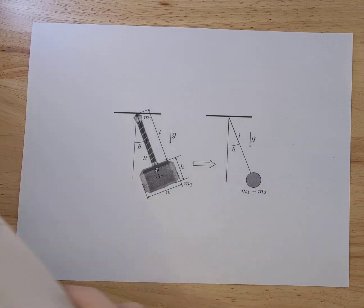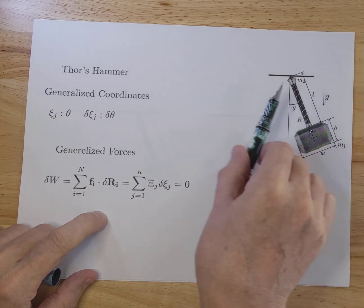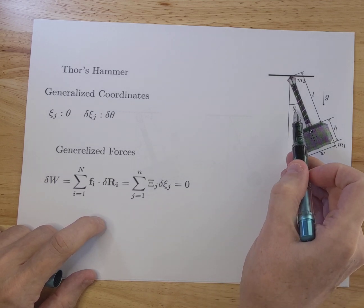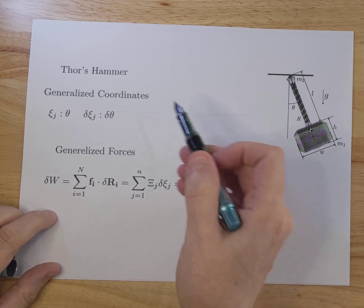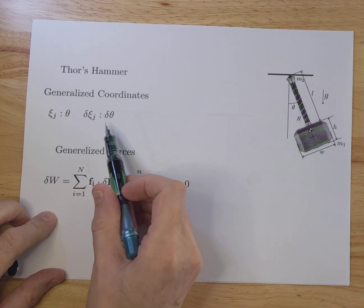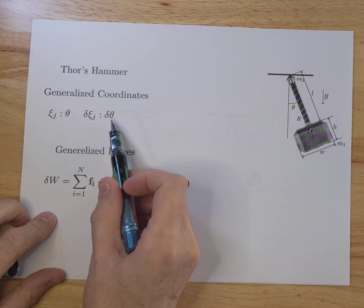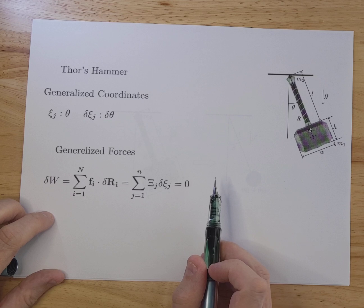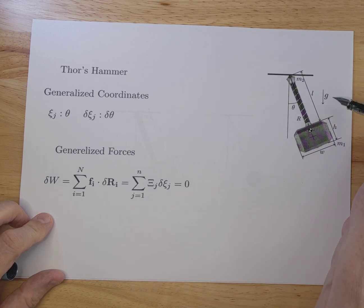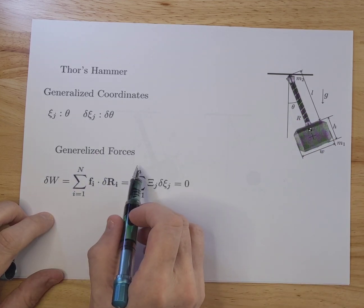The first thing we're going to do is look at the generalized coordinates. It's swinging back and forth in a plane, which means there is only one generalized variable, which is theta. I'm going to use the Lagrangian as I usually do, so theta is the generalized variable, and the infinitesimal variation is delta theta. Generalized forces are not present here — I only have gravity and there are no external forces, so all the generalized forces are zero.